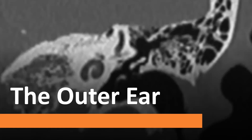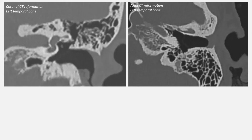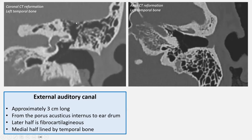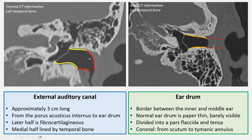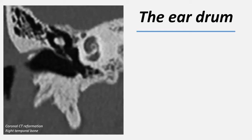The outer ear consists of the external auditory canal — which has a bony medial portion (the medial two-thirds) and a fibrocartilaginous lateral portion (the lateral one-third) — and the eardrum, which is the most medial part. The eardrum is the border between the outer and middle ear. On CT it is very thin and barely visible if normal.